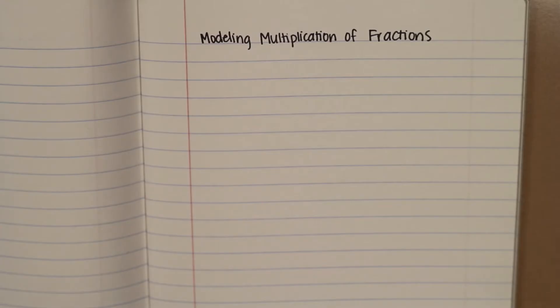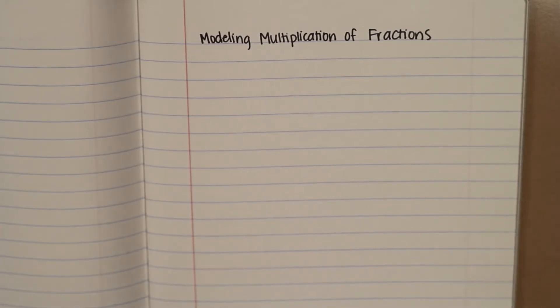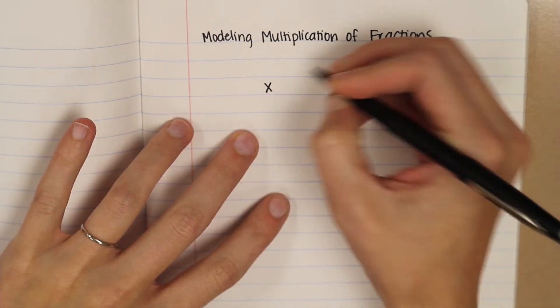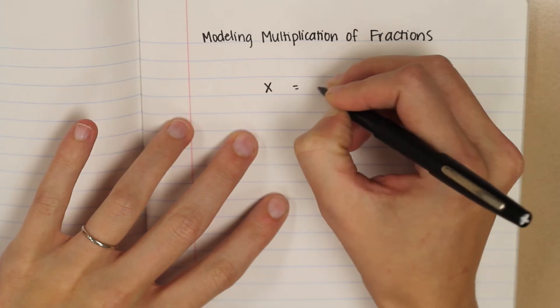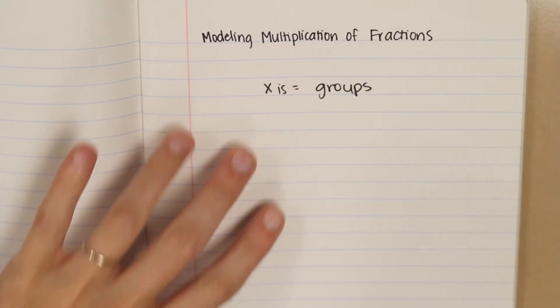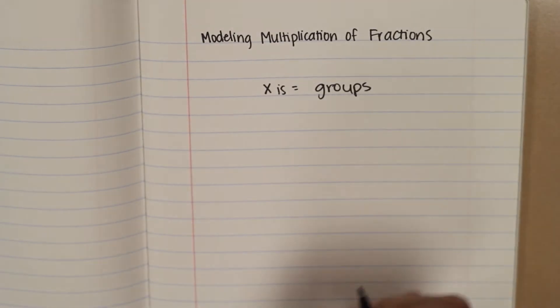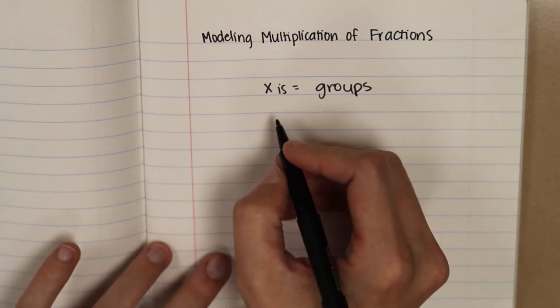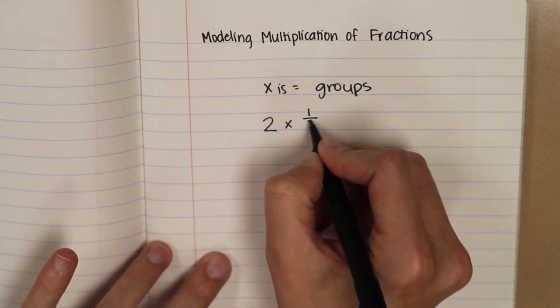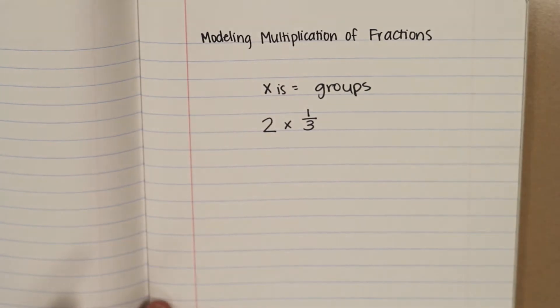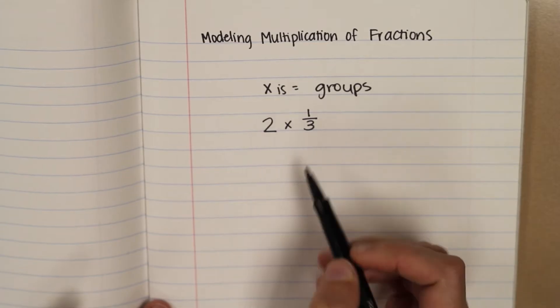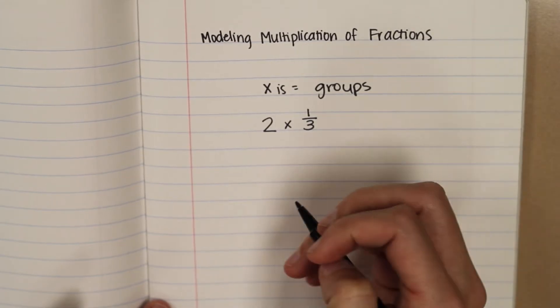Hey guys, it's Miss Hampton. We're going to talk about modeling multiplication of fractions today. Something to remember from when we did multiplication before is that multiplication is talking about equal groups. Multiplication is equal groups. So if we have a multiplication problem with a fraction, something like two times one-third, what you can think of this meaning is two groups of one-thirds, or two one-thirds. Repeated addition is a great way to go about this.